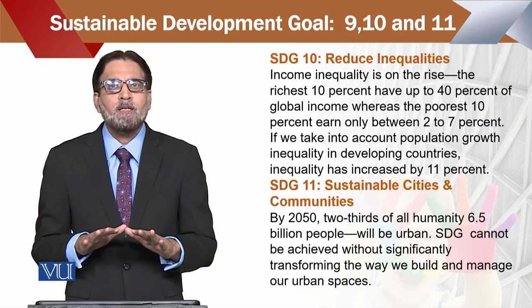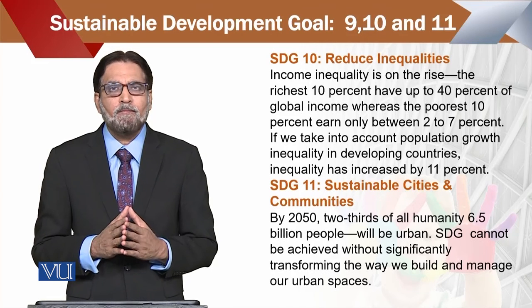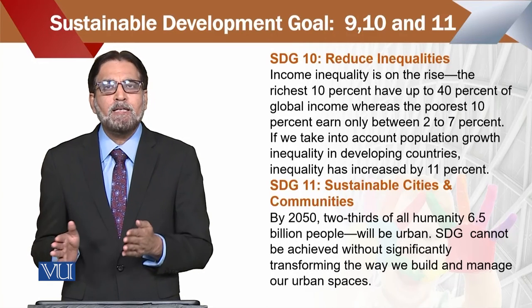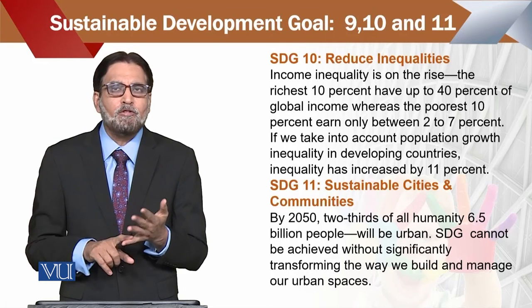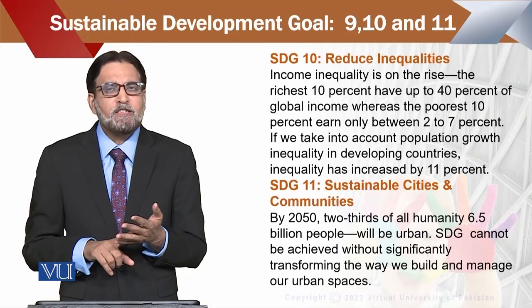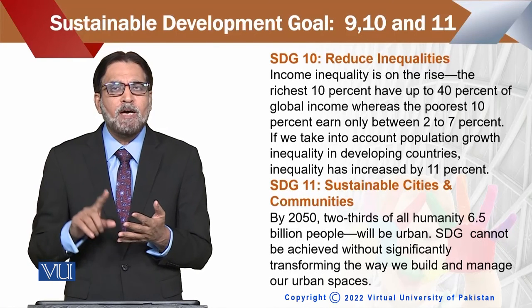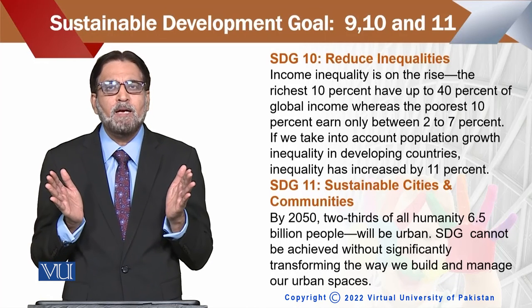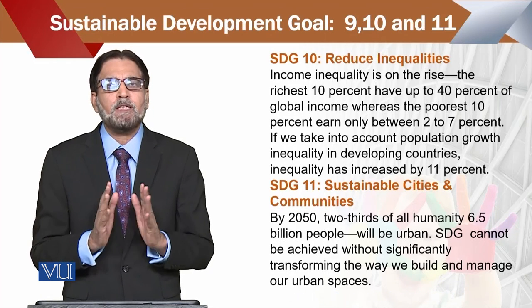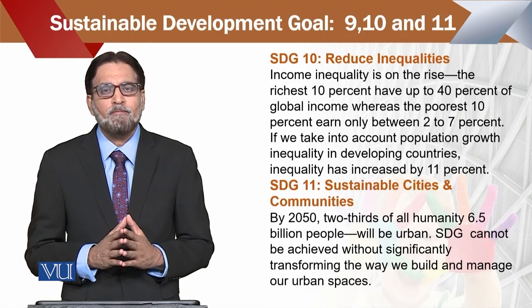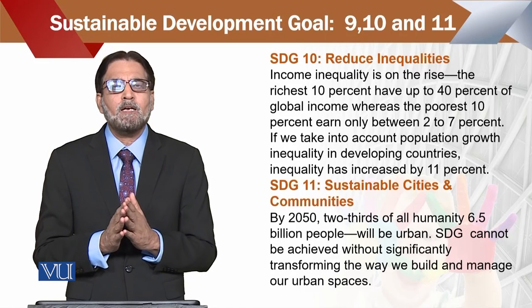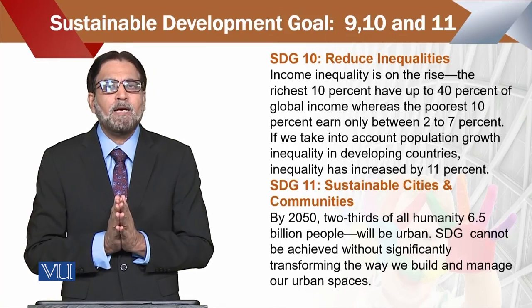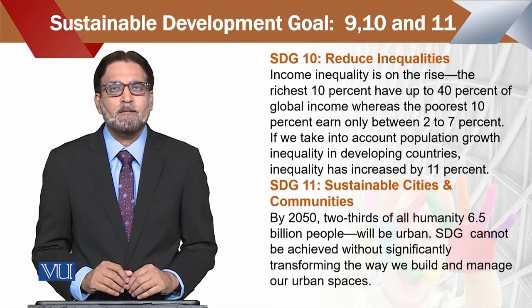Target یہ کیا گیا کہ 2050 تک پوری دنیا کے جو 6.5 billion لوگ ہیں، ان کو وہ تمام facilities provide کر دی جائیں گی جو urban areas میں موجود ہیں۔ یعنی ہم پوری دنیا کو urbanize کر دیں گے۔ Urbanize کرنے سے مراد یہ ہے کہ urban area کی health، education، transport، infrastructure، communication، technology اور advancement — یہ تمام چیزیں ہم 2050 تک provide کریں گے۔ یہی SDG 11 کا target ہے۔